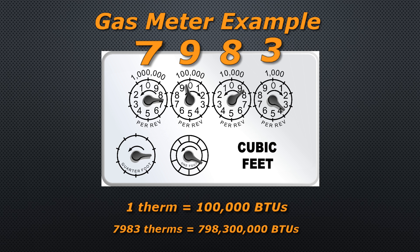So in our example we have 7,983 therms, or 798,300,000 BTUs. Feel free to pause the video if necessary to review the example.